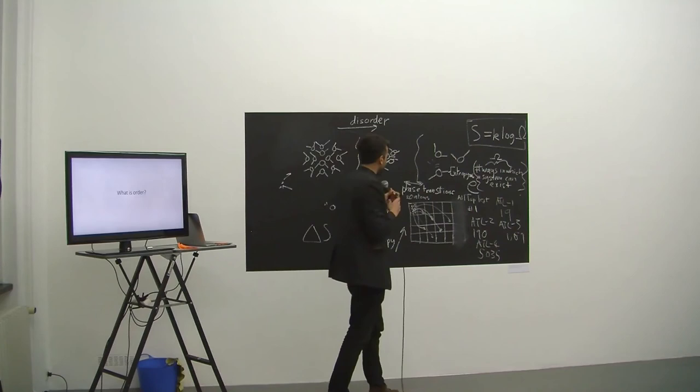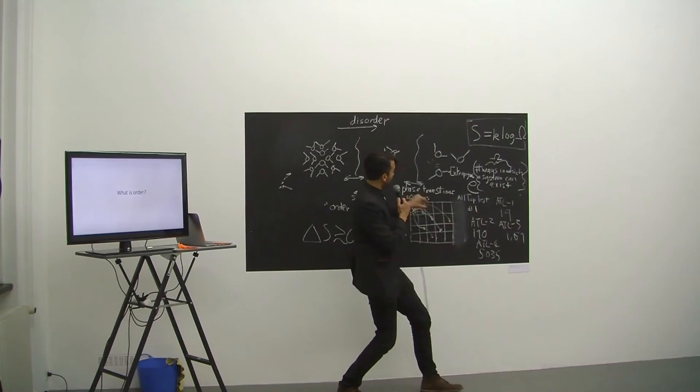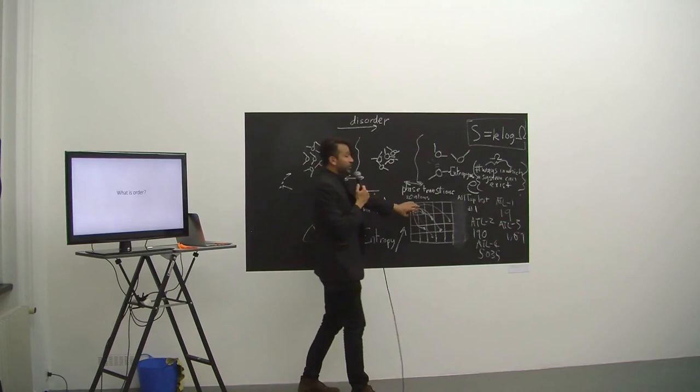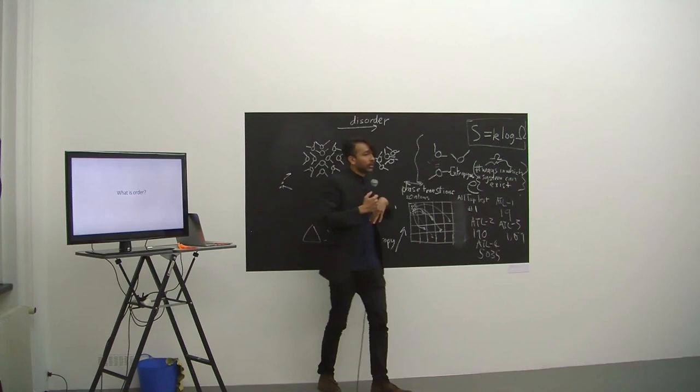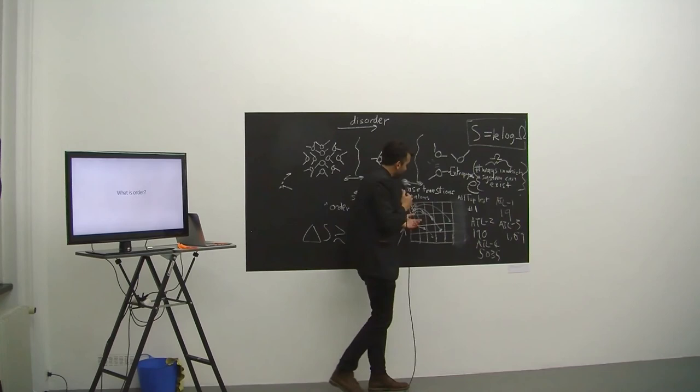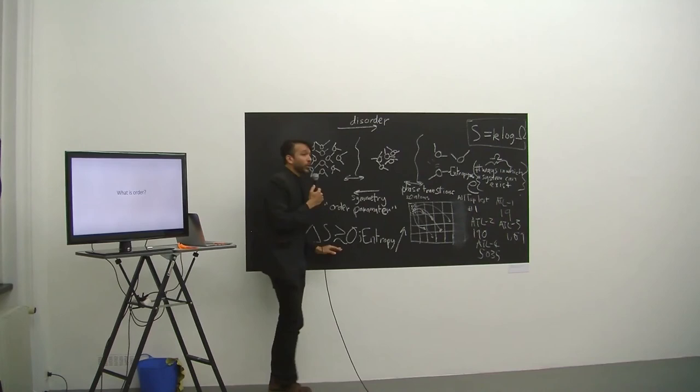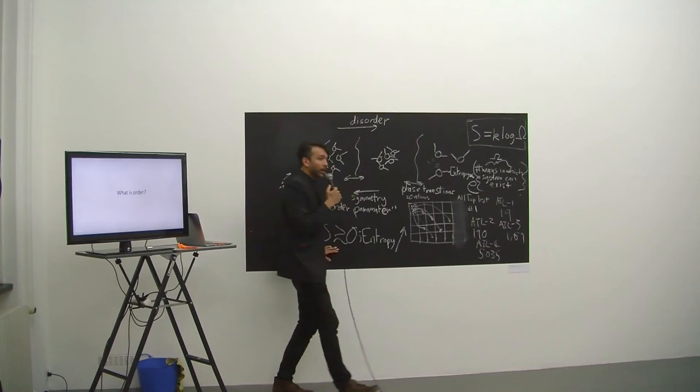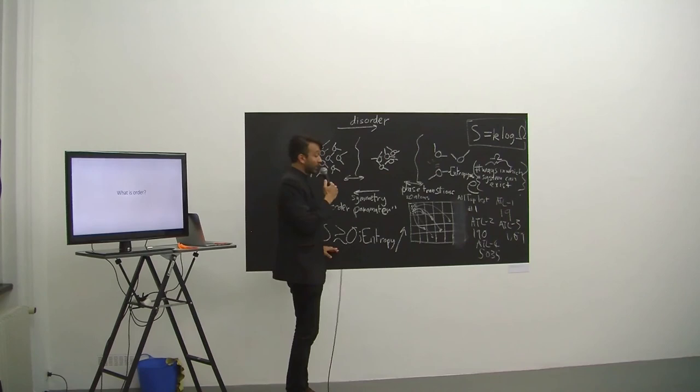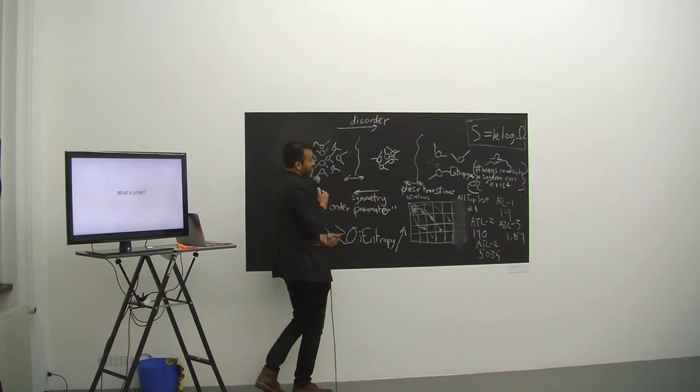The mathematical expression of it is: if I call the number of ways in which a system can exist Ω (omega), this is one of the most fundamental equations in all of physics - that entropy S is proportional to log(Ω). As you can tell, there's something very deep about this. Entropy always increases, statistically on average, across the universe.